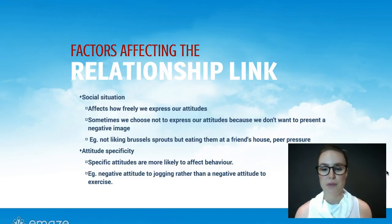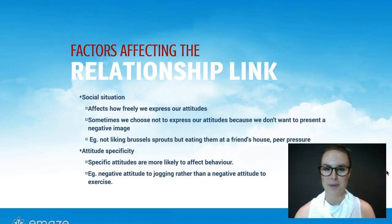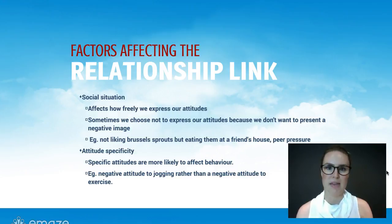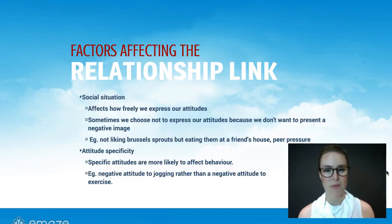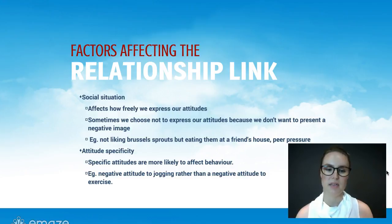Something like smoking because all of your friends are smoking — this kind of helps explain why that might happen, even if you don't like smoking. So if you're with all your friends and they are, the behaviour will affect that. Now attitude specificity — how specific an attitude is will also affect this relationship. Specific attitudes are more likely to affect behaviour. For example, having a negative attitude about jogging is more specific than just hating exercise, and it's more likely to change behaviour, so you're more likely to not jog.